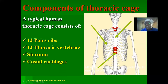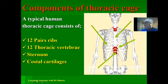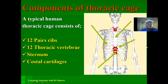The next structure is the costal cartilage. The costal cartilages are seen at the anterior end of the ribs. The ribs do not form a direct connection with the sternum; they are replaced by the costal cartilage in the anterior region, and it is the costal cartilage that forms a connection with the sternum. We'll take each of these structures one by one.